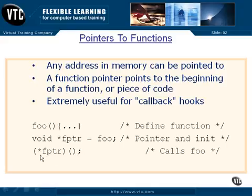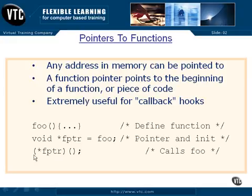If we want to call foo by that address, we have to use the parens around star f pointer. Otherwise we would get the contents of the address, and that's not what we want — we want to make the function call of the piece of code sitting inside f pointer. So we wrap it in parens to get the order of execution correct, and the parens here would have parameters in them if they were necessary to operate on foo.